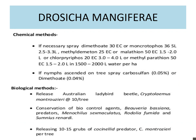Chemical control, if necessary: spray Dimethoate 30 EC or Monocrotophos 36 SL at 2.5 to 3 liters, Methyl demeton 25 EC or Malathion 50 EC at 1.5 to 2 liters, or Chlorpyrifos or Methyl parathion in 1500 to 2000 liters of water per hectare. If nymphs ascend the tree, spray Carbosulfan 0.05% or Dimethoate 0.04%.